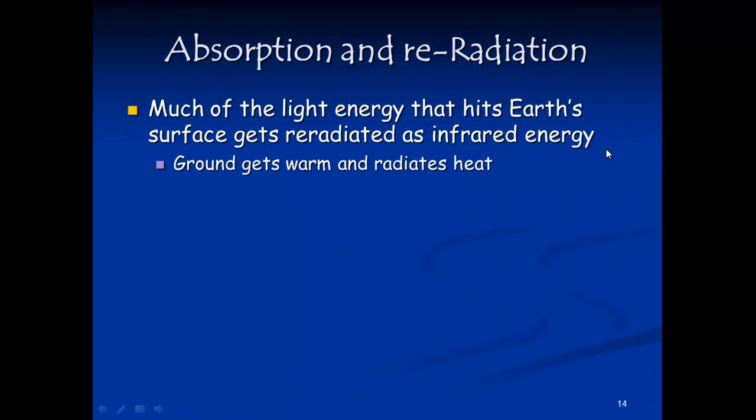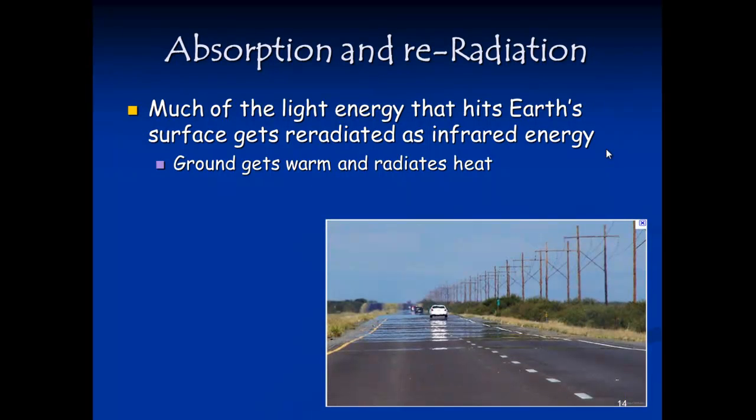Earth's surface absorbs and re-radiates much of the sun's EM energy that gets through the atmosphere. Without greenhouse gases, however, that warmth would just be re-radiated back out to space as soon as it became dark. That's because most of the air is not affected by infrared.